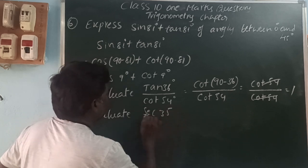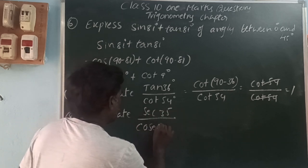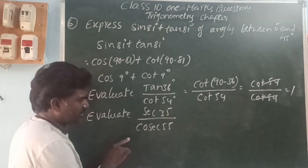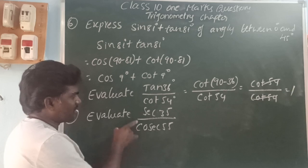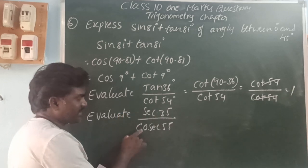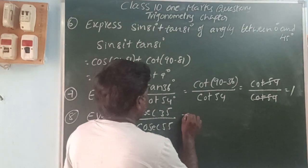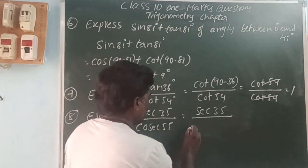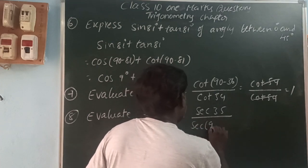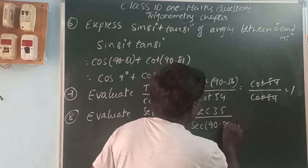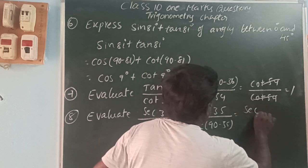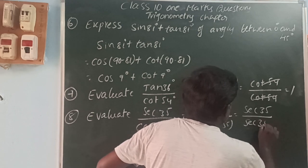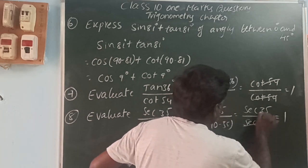Next: evaluate sec 35° divided by cosec 55°. Since 35 and 55 are complementary angles, we can change cosec 55° using complementary angles. Cosec of 55° becomes sec of 90 minus 55, which is sec 35°. So the expression becomes sec 35° divided by sec 35°. The numerator and denominator are the same, so the value is 1.